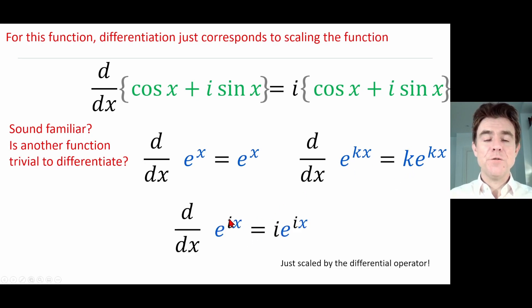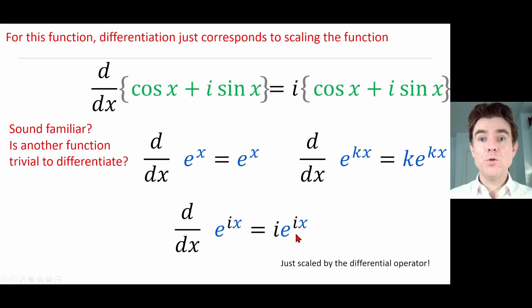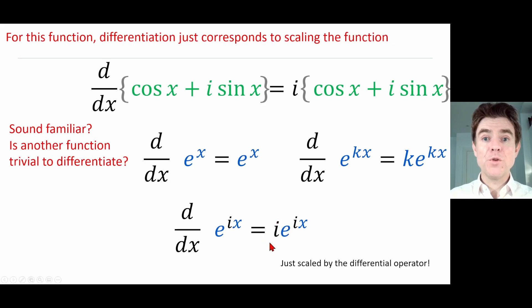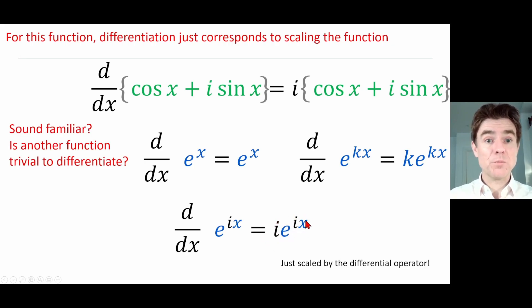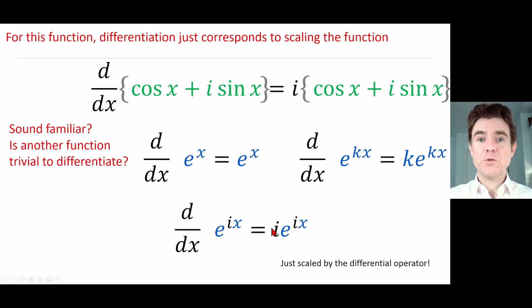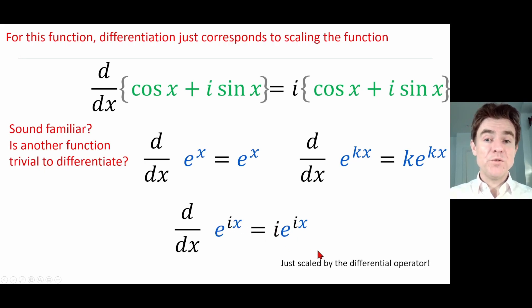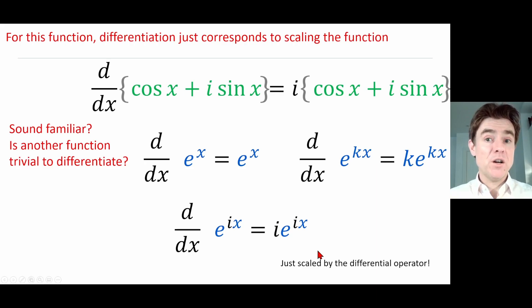What if for k we just use i, the square root of minus one? If we differentiate e^(ix), we still get e^(ix) thanks to the exponential function, but by the chain rule it will be multiplied by the derivative of ix with respect to x — in other words, just i. So for this exponential function e^(ix), when we differentiate it we're just scaling that original function by i, which is the square root of minus one.